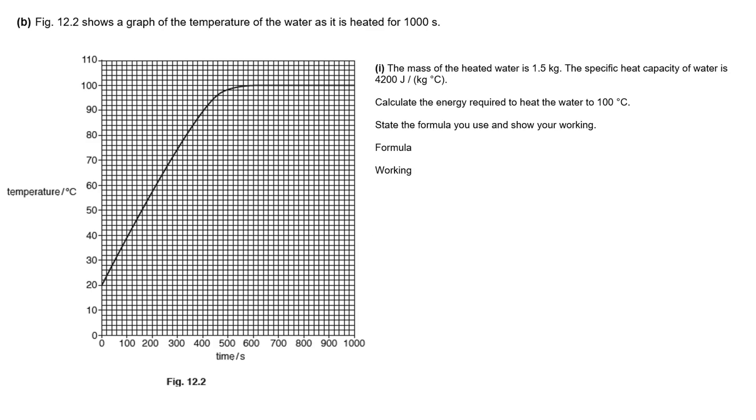We've got a graph of temperature of the water over a thousand seconds, the mass of the water, and the specific heat capacity of the water. Calculate the energy required to heat the water to 100 degrees. The formula is Q equals mc delta T. The temperature change is 80 degrees because it's going from 20 to 100. We've got the mass, we've got the specific heat capacity, therefore we can calculate the thermal energy supplied.